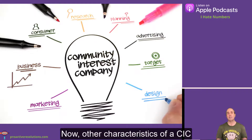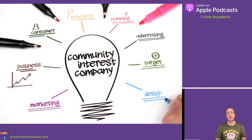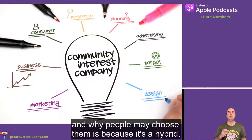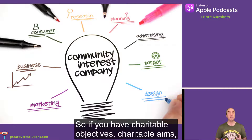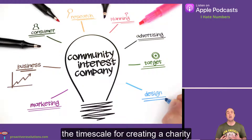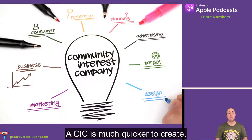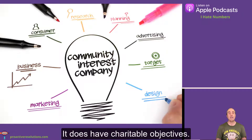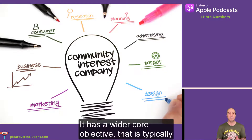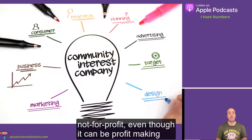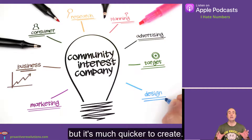Other characteristics of a CIC, and why people may choose one, is because it's a hybrid. If you have charitable objectives, the timescale for creating a charity can be several months. A CIC is much quicker to create. It doesn't have charitable objectives — it has a wider community objective and is typically not-for-profit, even though it can be profit-making.